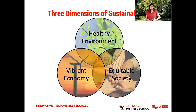For example, the financial crisis had implications for the environment and society, not only the economy. Similarly, climate change has implications for society and economies. Therefore, any viable or sustainable solution to global problems requires a consideration of all three of these dimensions.